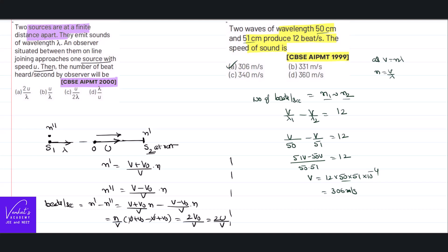But velocity of the sound is not the given data, so what we can do is as v equal to n lambda. Of course I have missed something.